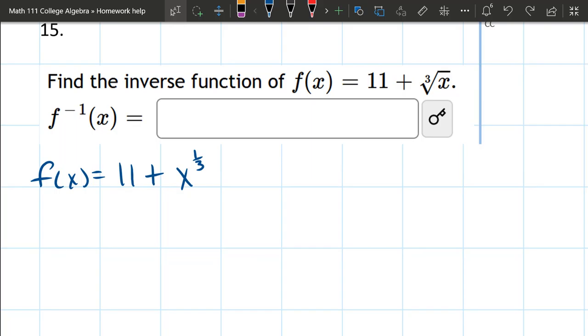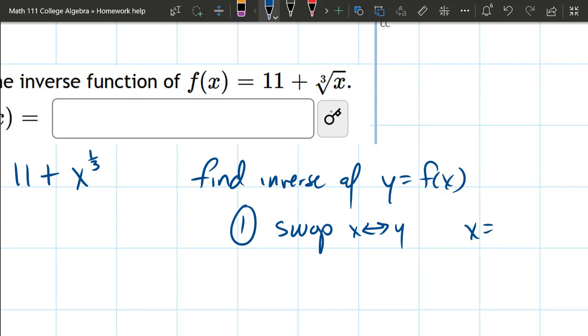Okay, so how do you find an inverse? Well, this is in the notes and your book, but there's two steps. So we're gonna find the inverse of y equals f of x. And step one, you're gonna swap x with y. And what that will look like, x equals f of y. Step two, solve for y.